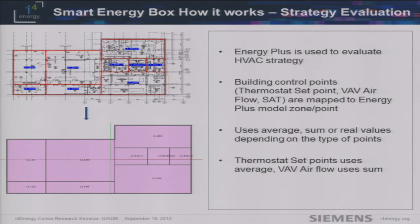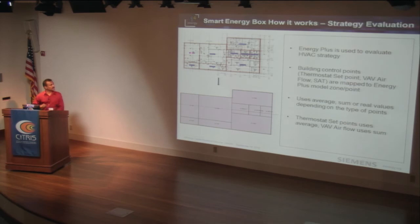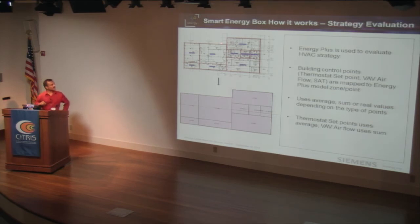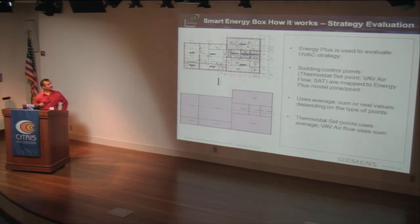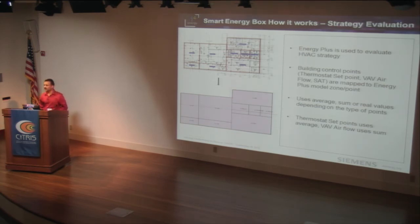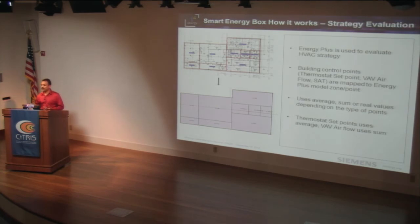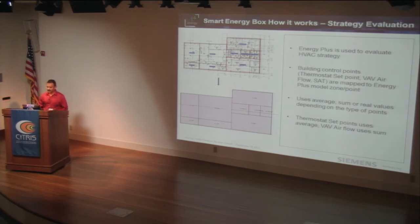For strategy evaluation, we use EnergyPlus. This is a real building model developed by LBNL for this project. In the real building there are many control points, which in the model may be clubbed into one zone. For example, thermostats distributed throughout the building might map to a single zone in EnergyPlus. We take all thermostat set points configured as part of the strategy, compute the average for temperature set points or the sum for VAV air flows, and adapt them for the corresponding EnergyPlus model for evaluation — this is how LBNL performs strategy evaluation.